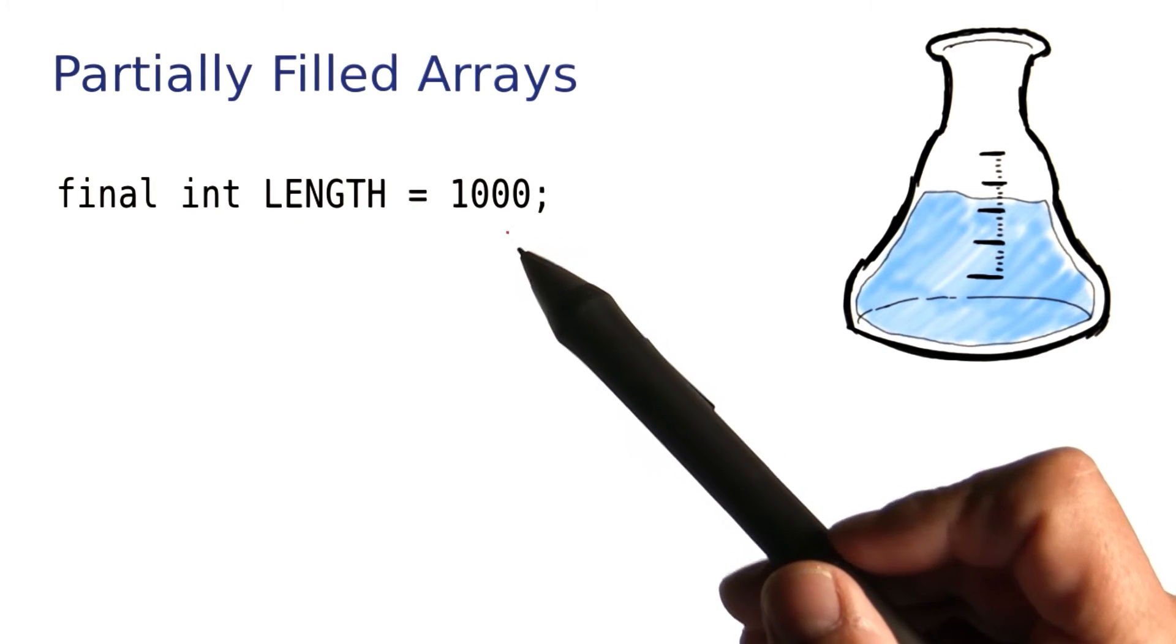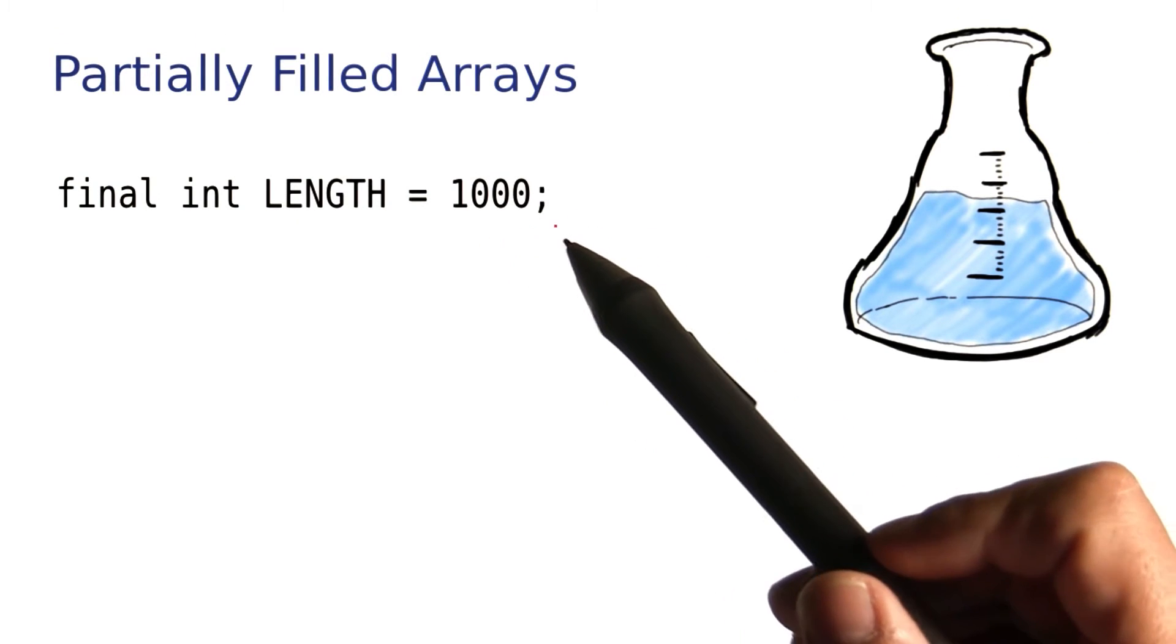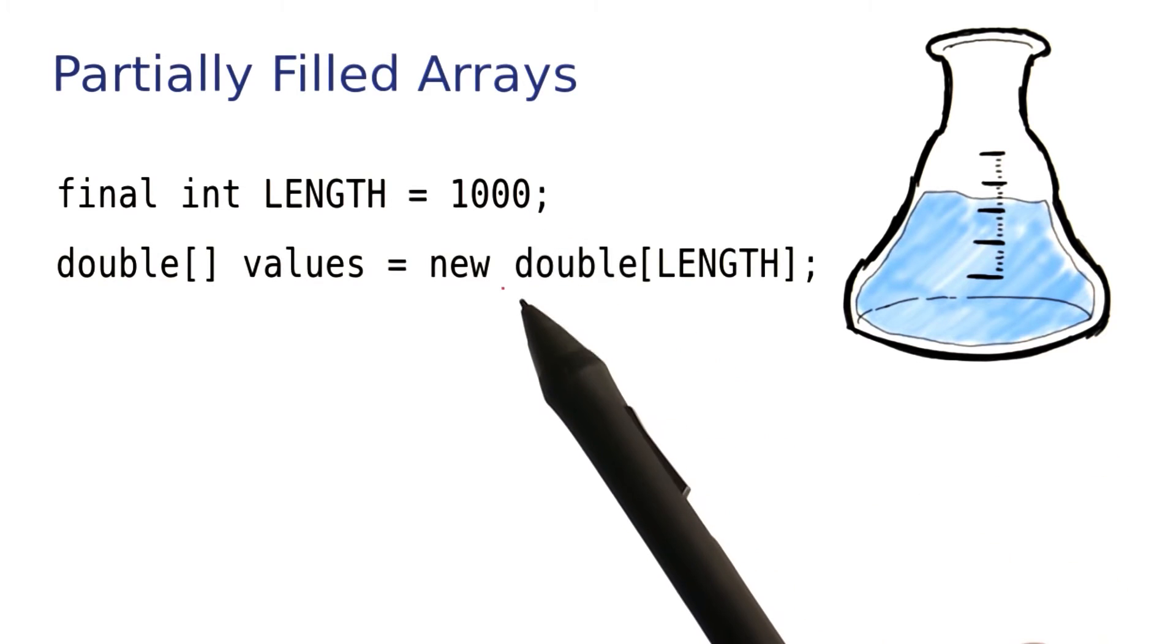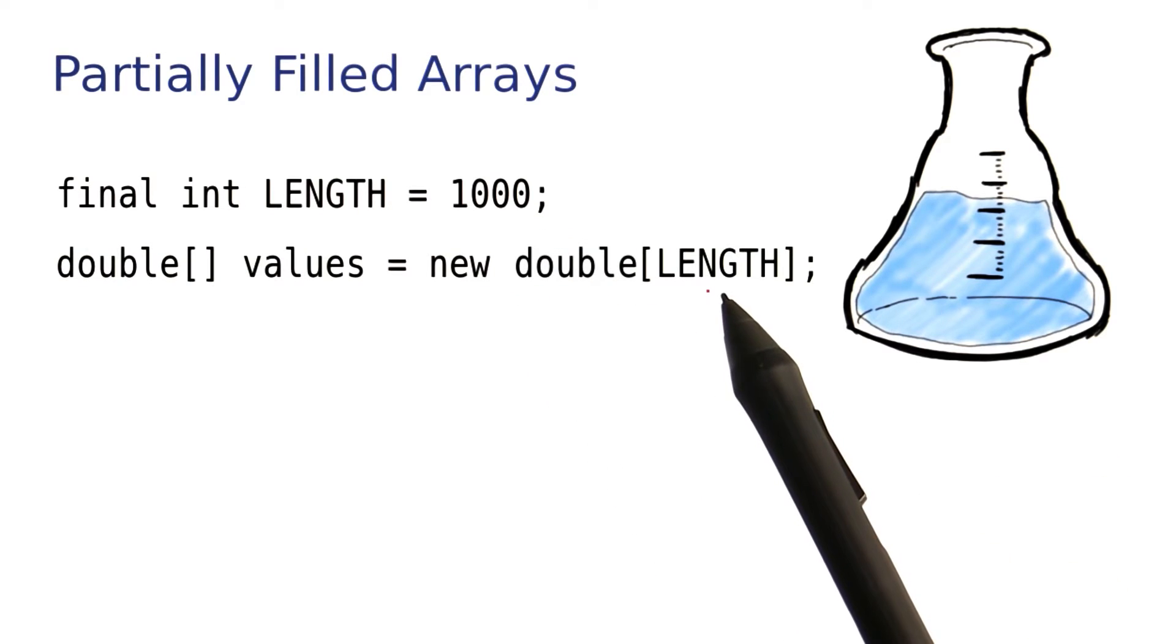You need the overall length of the array. So here I'll assume I'll never have more than a thousand numbers. I allocate my array to have this length.